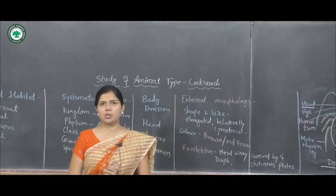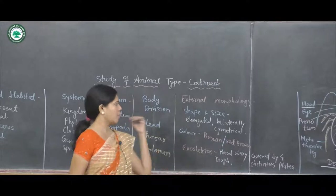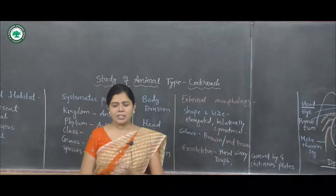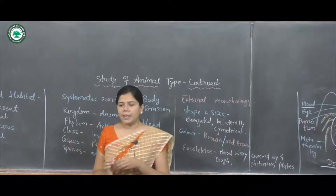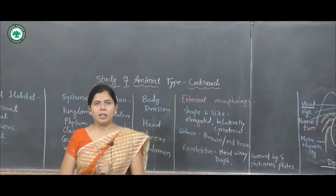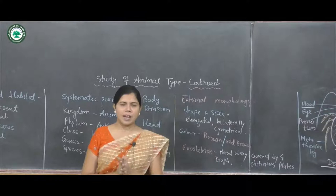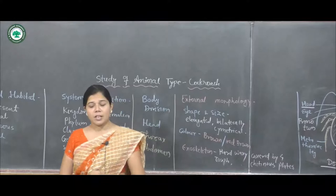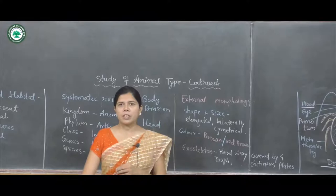Now we discuss the external morphology of cockroach. The shape and size: it is elongated, bilaterally symmetrical, and dorsoventrally flattened. They are triploblastic, eucoelomate, and truly segmented animals. The body cavity is called the haemocoel, filled with haemolymph.